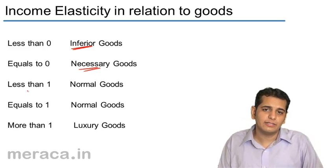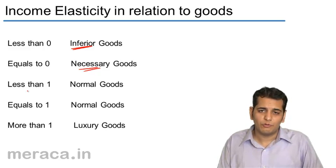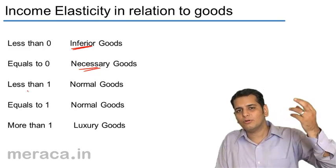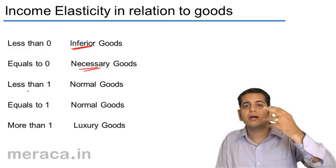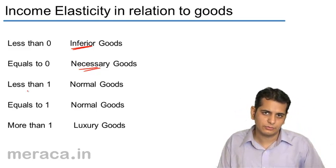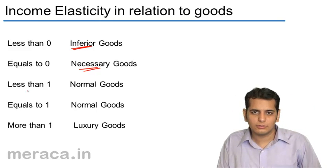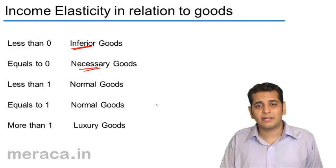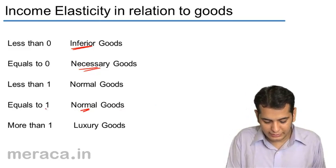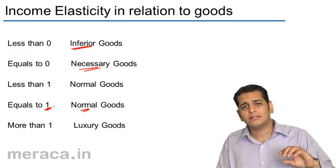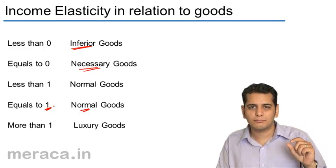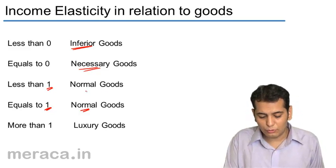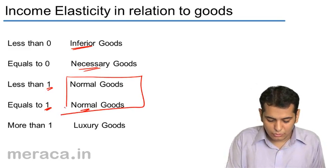What will be the case if the elasticity of demand is one or less than one? That means when the income of the person is rising, the demand for goods also rises — though it may not be proportionate. Demand rises either proportionately, meaning it equals one, or rises but not proportionately, meaning it is less than one. In either case, the goods being considered are normal goods.